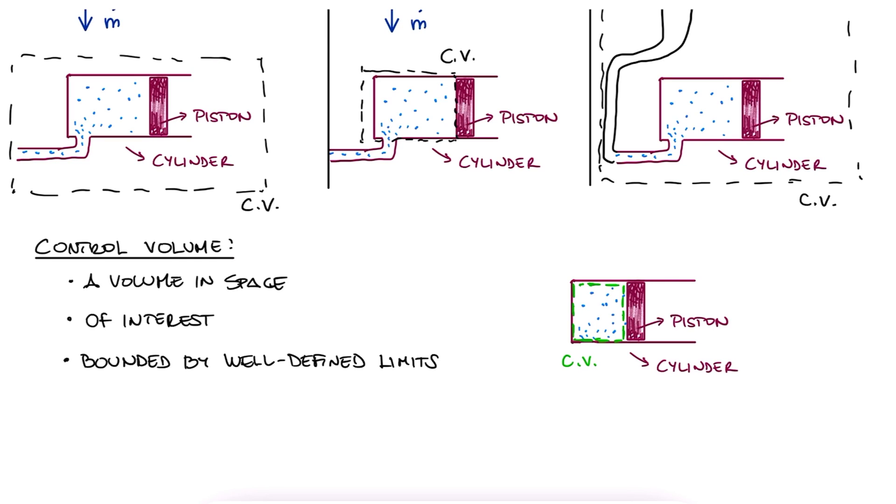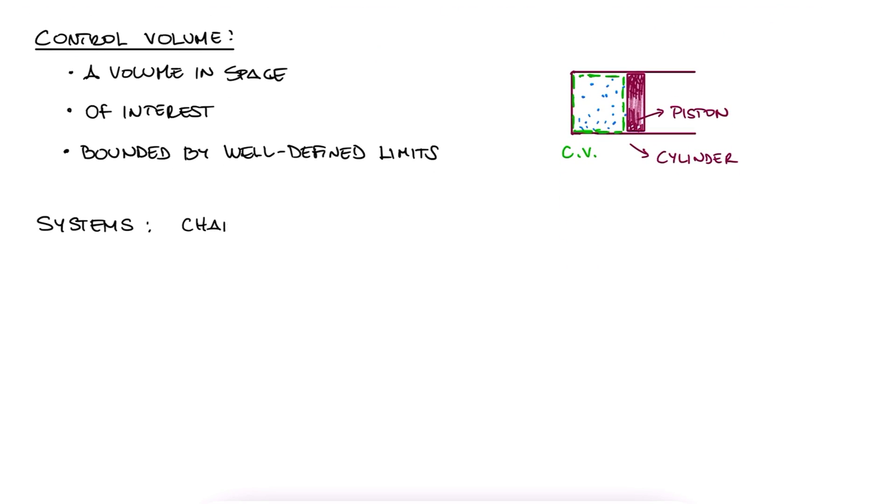We often talk about systems, but for most of what we state for a system is also true for the control volume we select of a larger system. In general, a system is characterized by its properties. If the properties change, we'd say that its state changed. We'd say that the system has undergone a process.